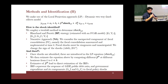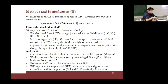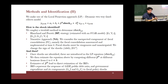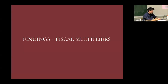Once shocks are introduced in the local projection equation, we estimate different beta-H coefficients at different horizons from T to T+H, where H equals 5 years. The estimates of beta-H allow us to compute the impulse response function, which represents the response of GDP, public debt-to-GDP ratio, and spending components to different fiscal policy shocks.